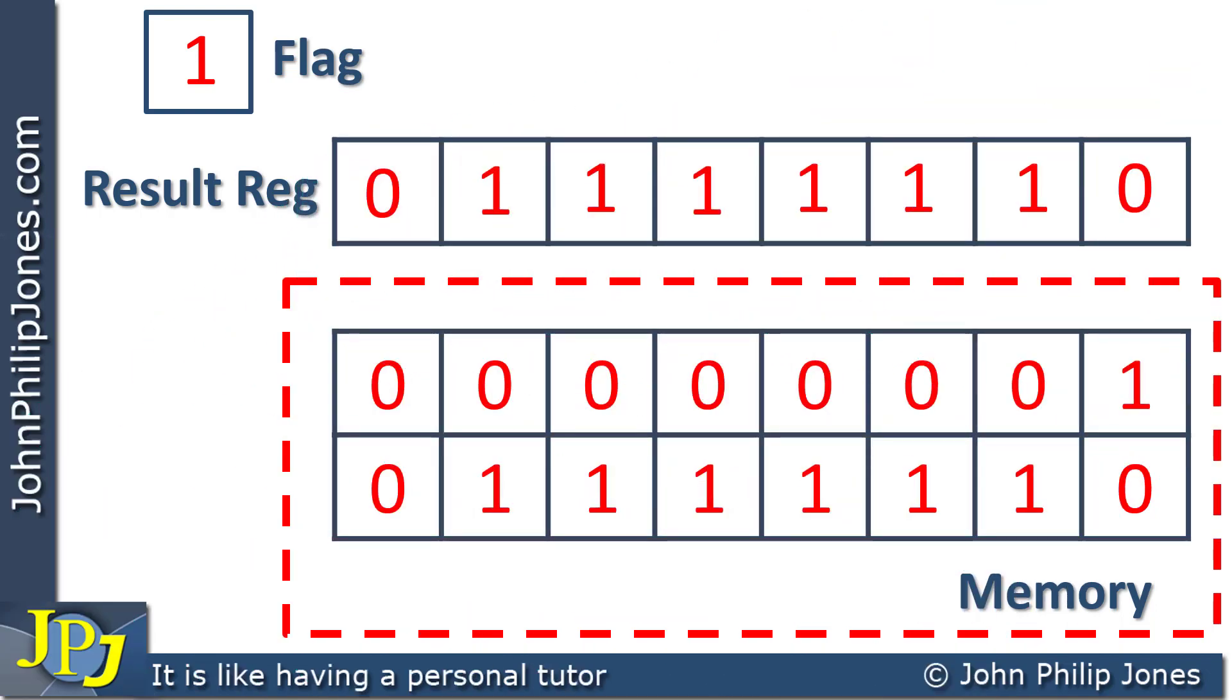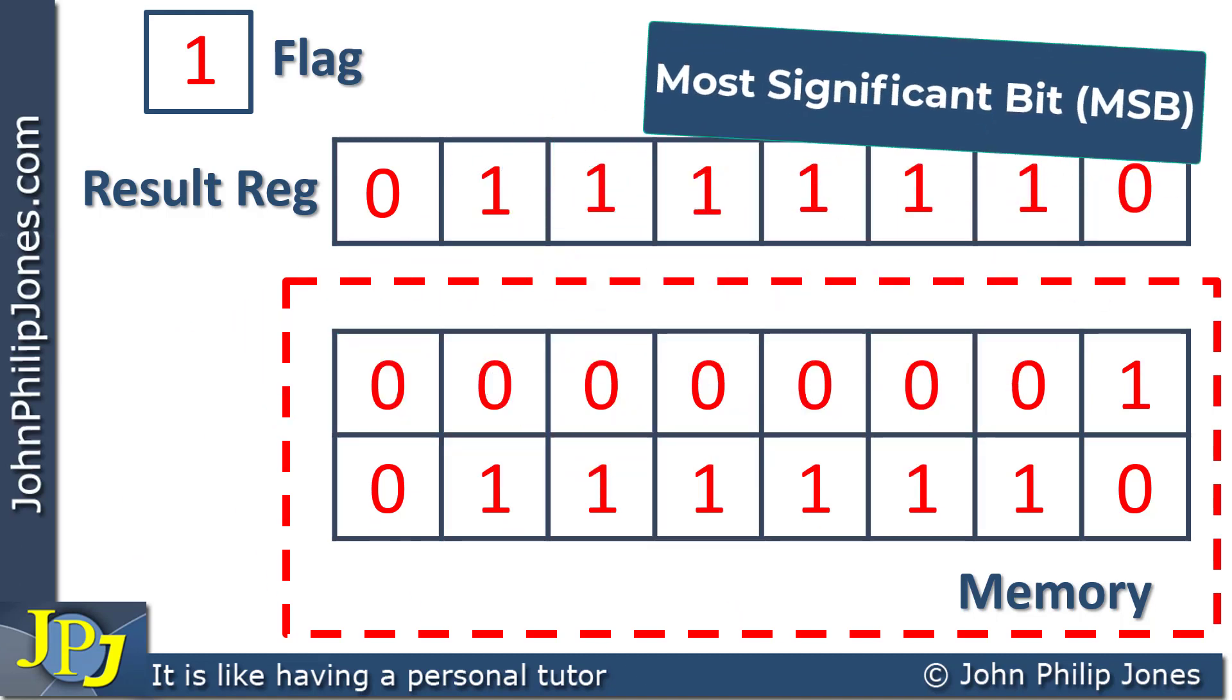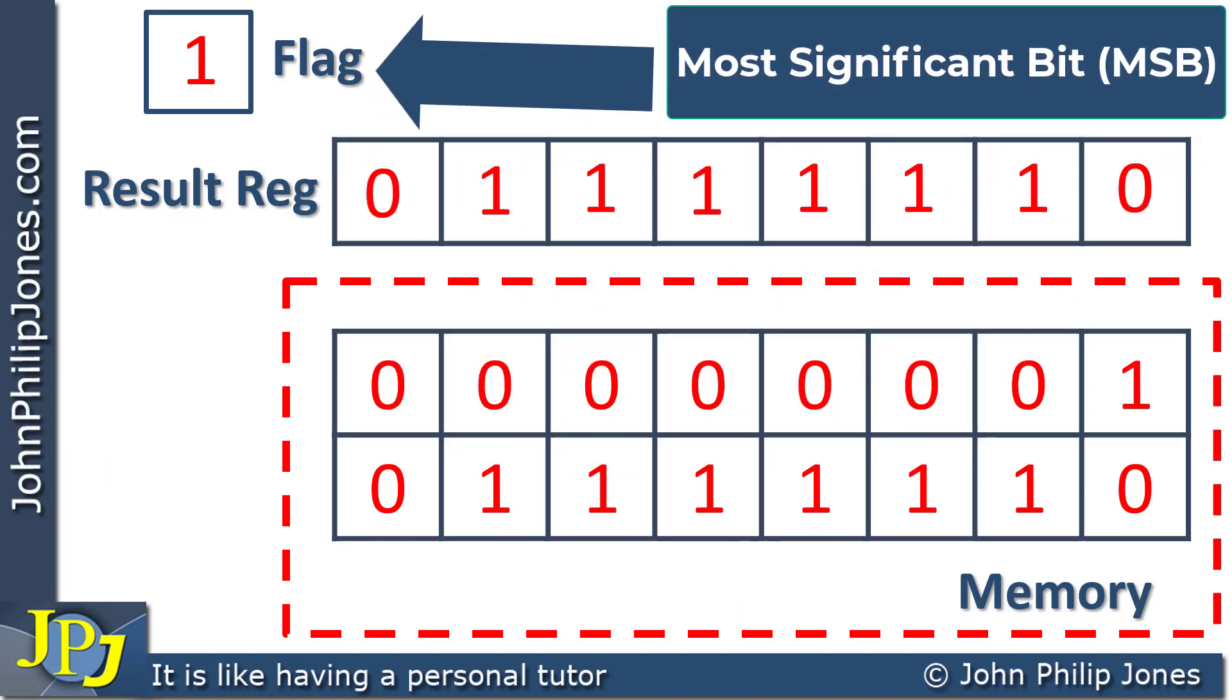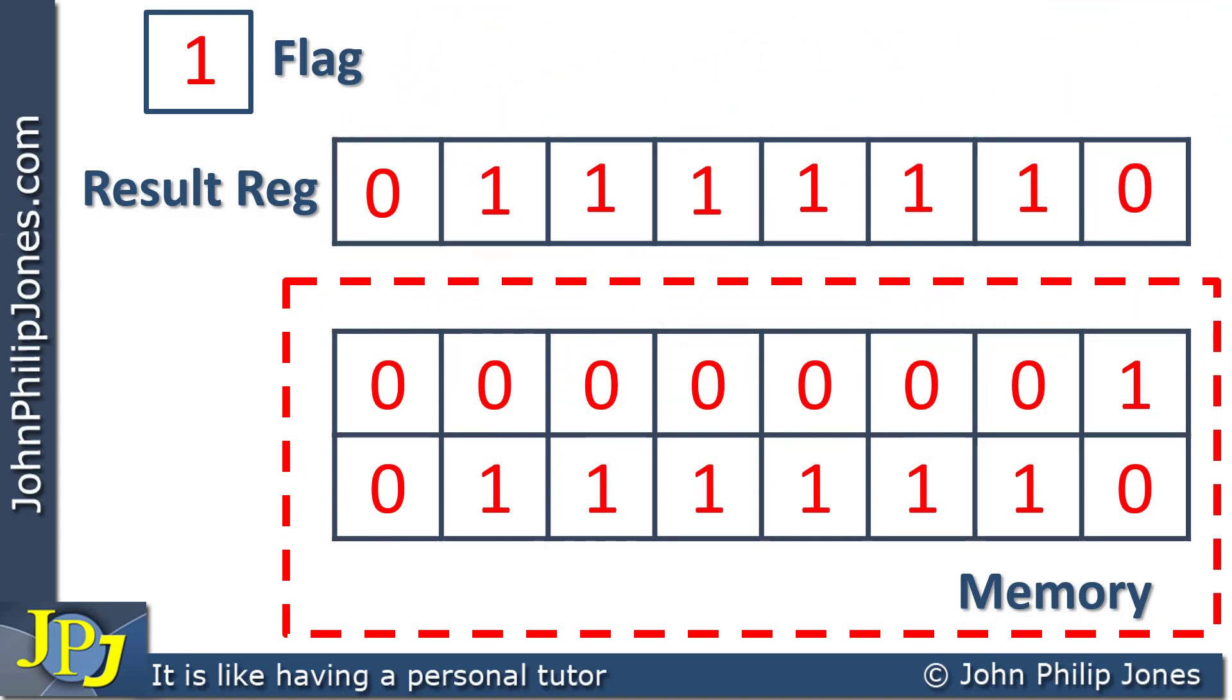The result of the addition we have seen in this video creates a 9-bit result. The most significant bit of that result is here in the flag. The remaining eight bits are here. So what in effect we've done, we've stored a 9-bit result across two consecutive memory locations.